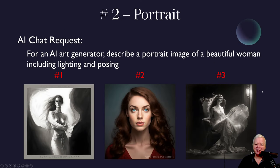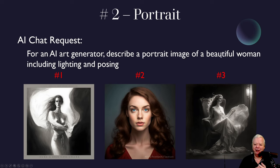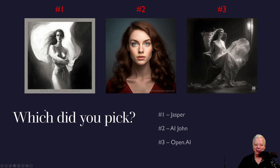Let's move on to the second one. I wanted to do a simple portrait image, so I asked: for an AI generator, describe a portrait image of a beautiful woman, including lighting and posing. Here's what was returned: we have number one, number two, and number three. Which one do you think was made by Jasper? Which one was made by OpenAI? And which one was made by me? Got your picks ready? Pause if you don't — this is the fun of this. As you can see, number one was the portrait as described by Jasper, number two was described by me, and number three was described by OpenAI.